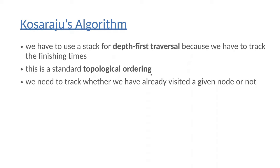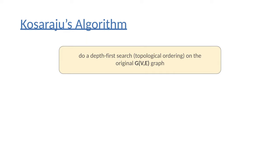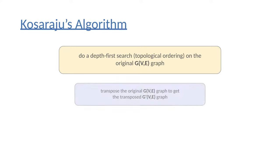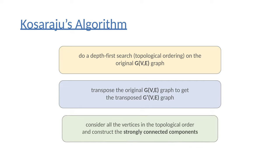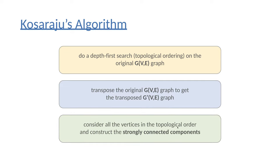First of all, we need the topological ordering. So the first depth-first search is going to find the topological ordering, and then we have to make another depth-first search. During the algorithm we have to track whether we have visited the given vertices or not. We do a depth-first search to calculate the topological ordering, then we transpose the original graph to get G', and finally we consider all the vertices in topological order in order to construct the strongly connected components.